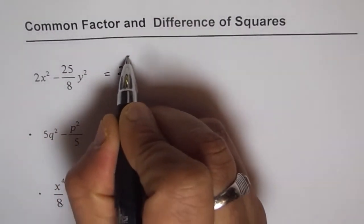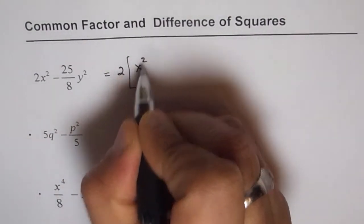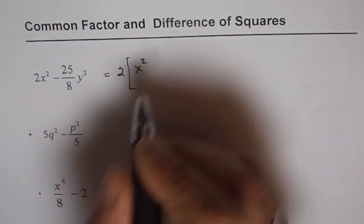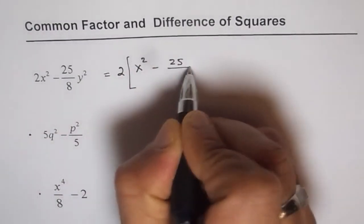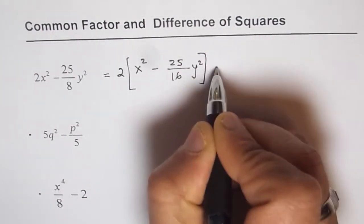So what we can do here is we can factor out 2. So if I factor 2, what do I get? I get x² here and I have to divide this term by 2. Thereby, I'll get 25 over 16 y². Do you see that?